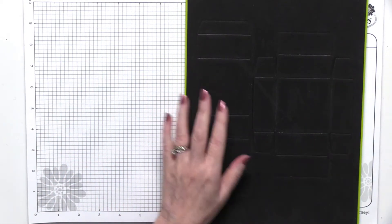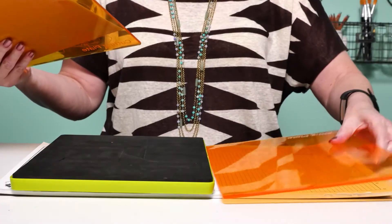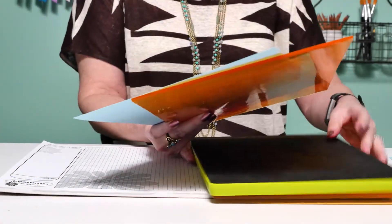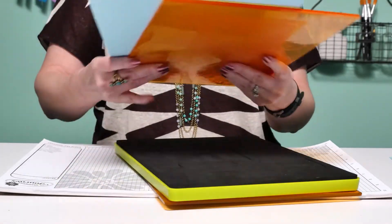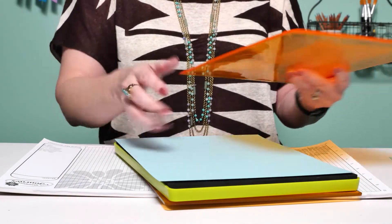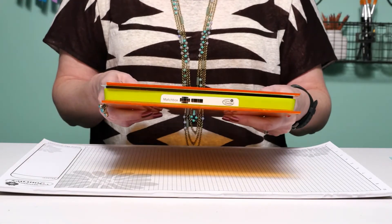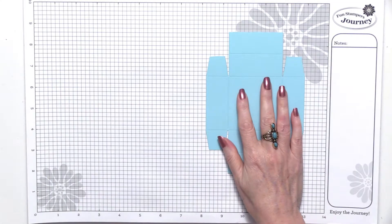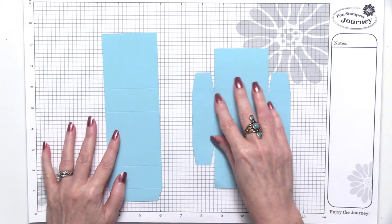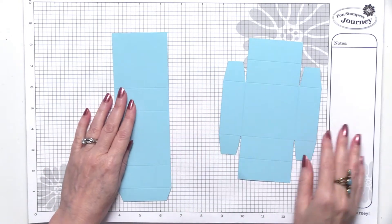The sandwich for running these through our machines is you're going to place it between two cutting plates. You're going to put your cardstock on there, and then you are going to run it just like this. The pieces that are going to come out are the actual box and then the band that goes around it.